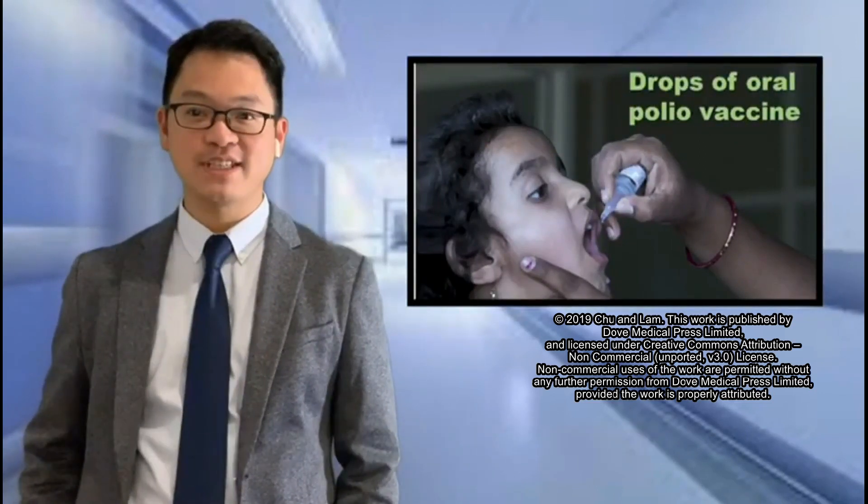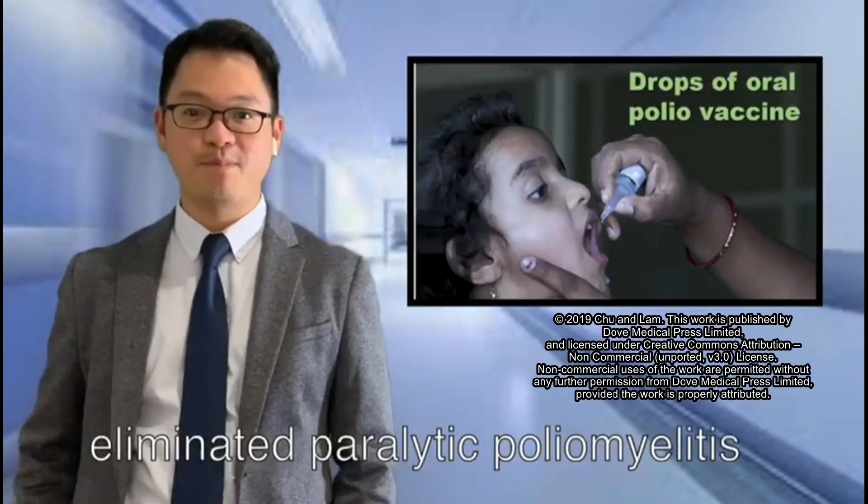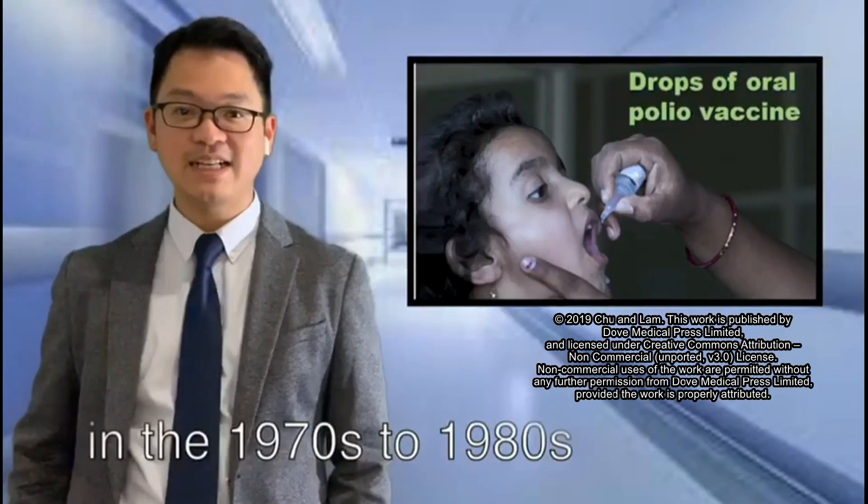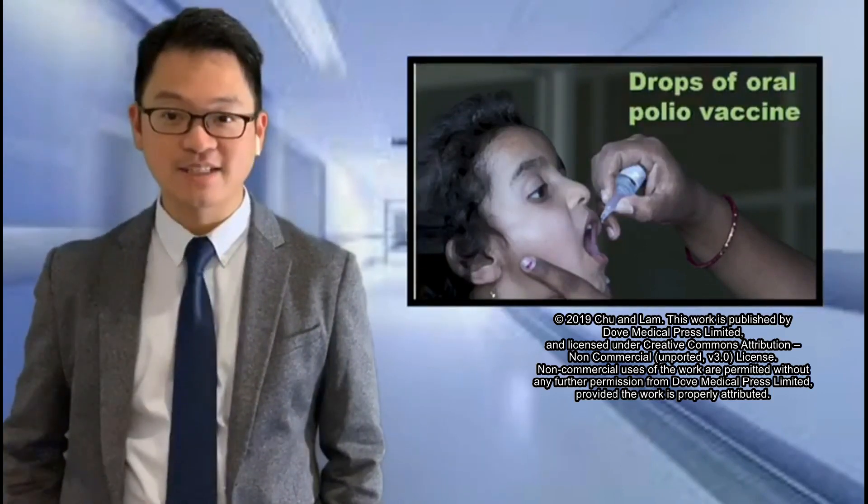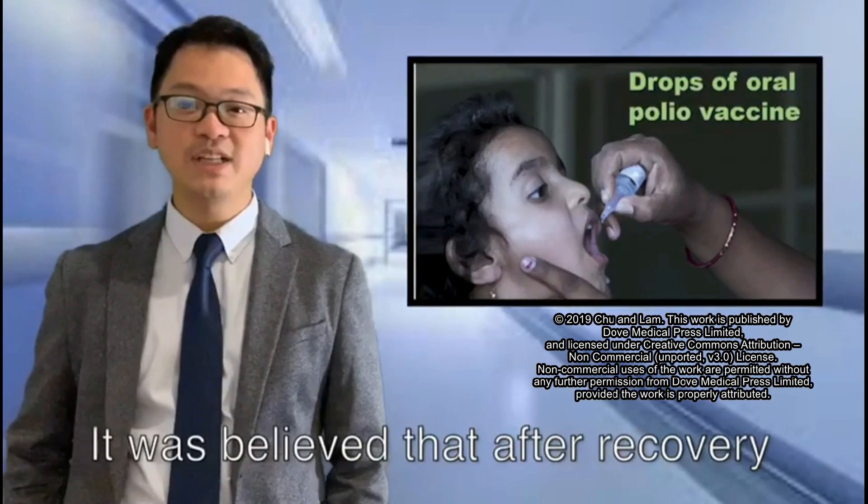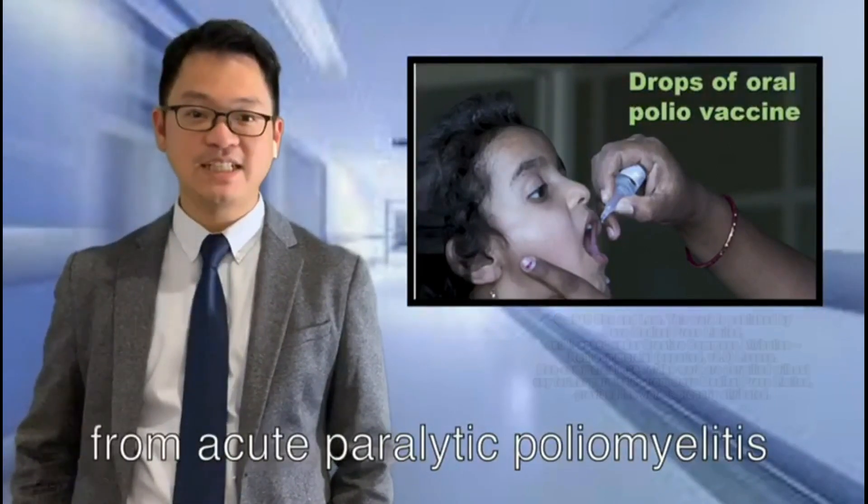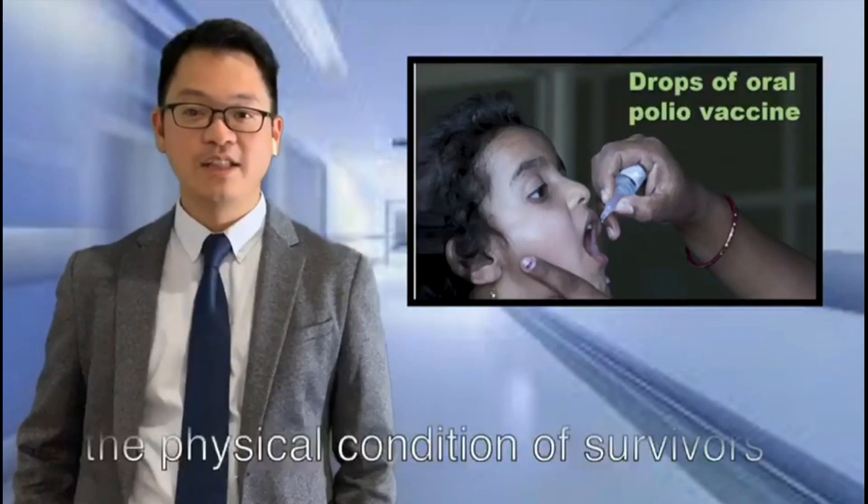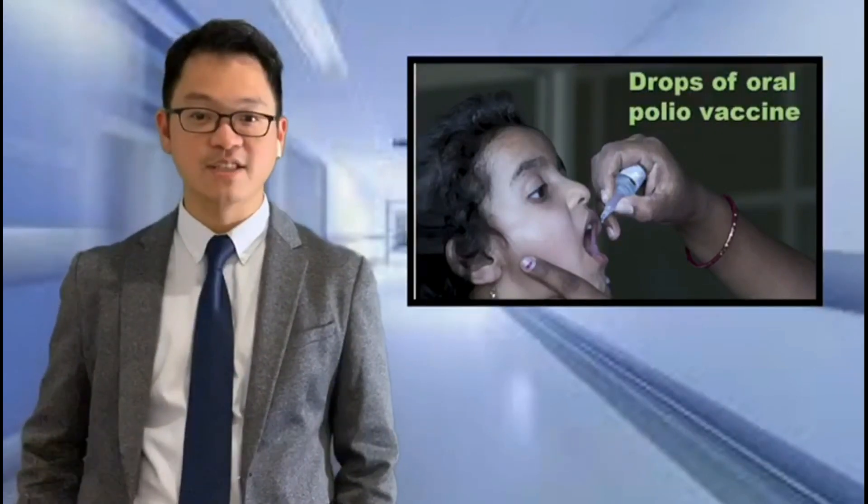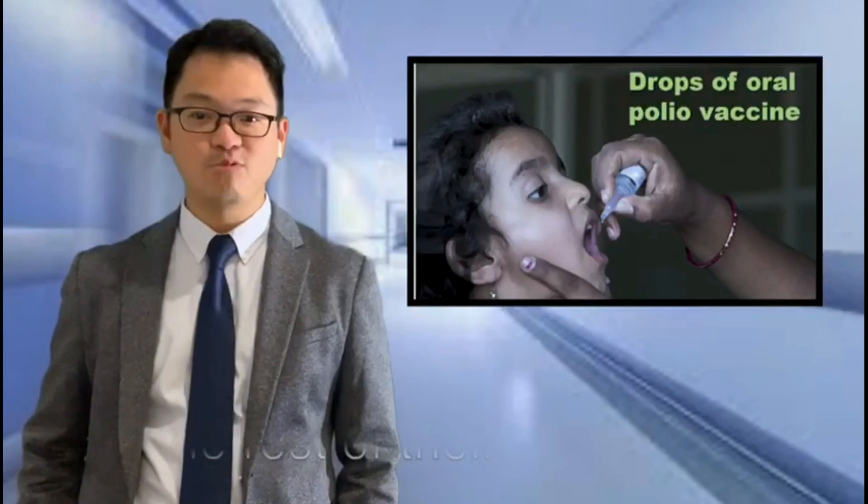Most developed countries eliminated paralytic poliomyelitis in the 1970s to 1980s. It was believed that after recovery from acute paralytic poliomyelitis, the physical condition of survivors would remain stable for the rest of their lives.